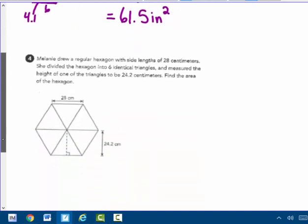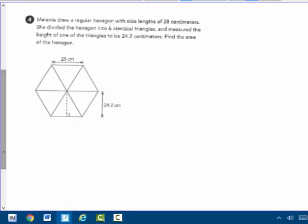Melanie drew a regular hexagon with side lengths of 28 centimeters. So all of them are 28. She divided that hexagon into six identical triangles and measured the height of one of the triangles to be 24.2 centimeters. Find the area of that hexagon.